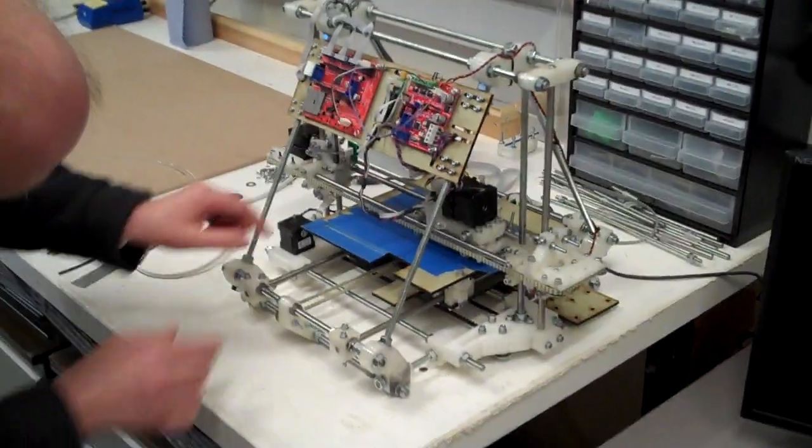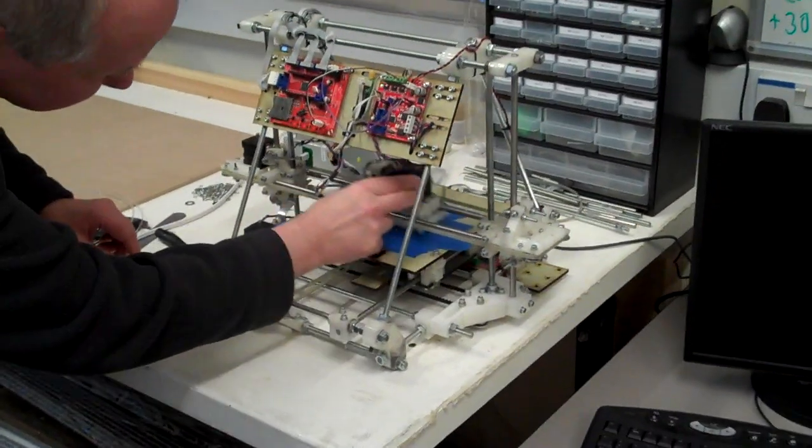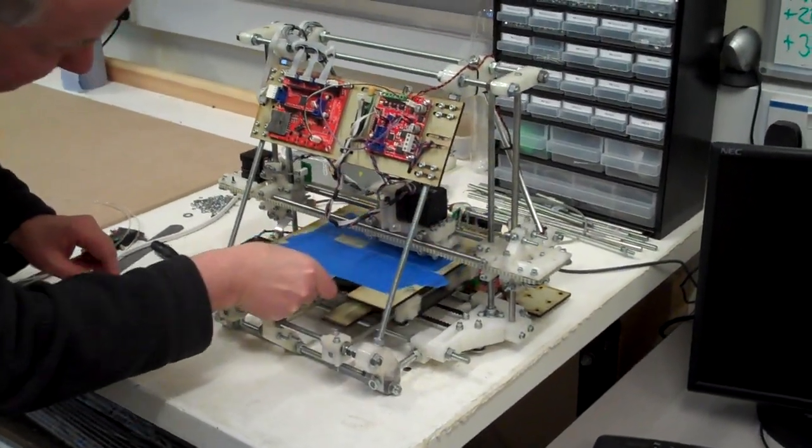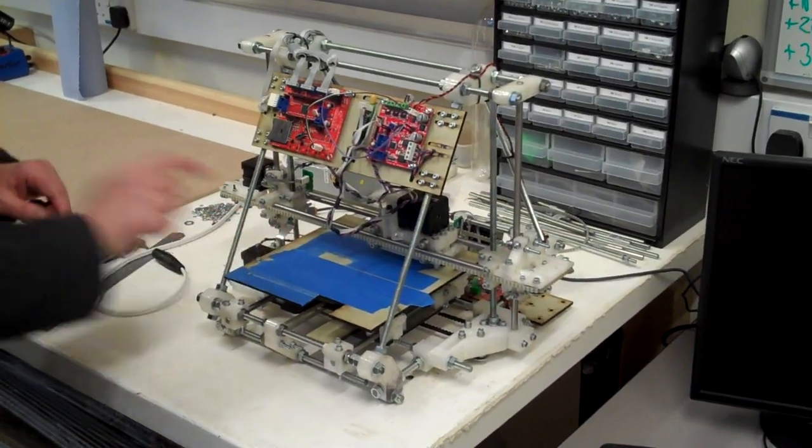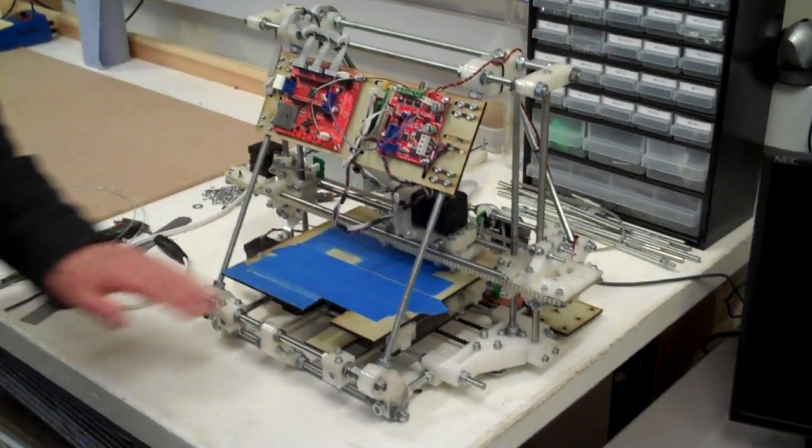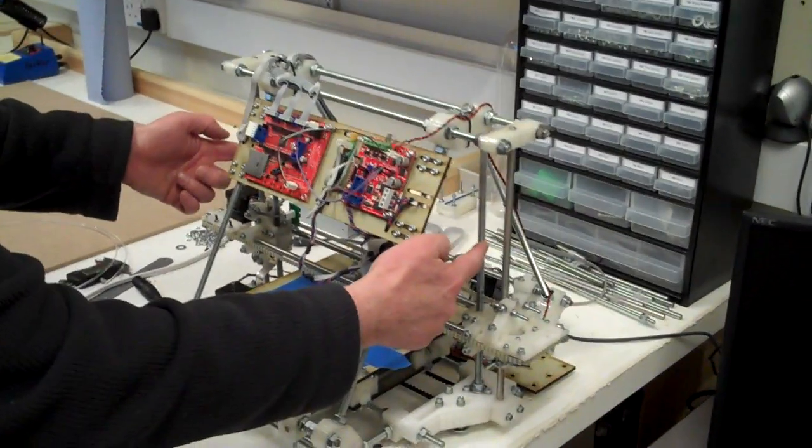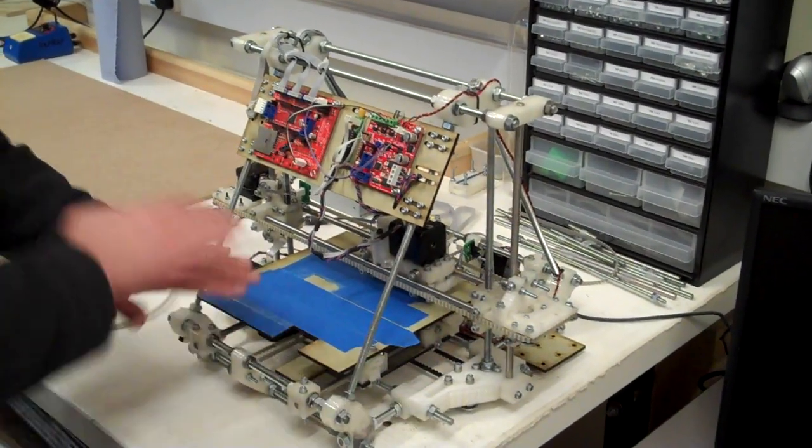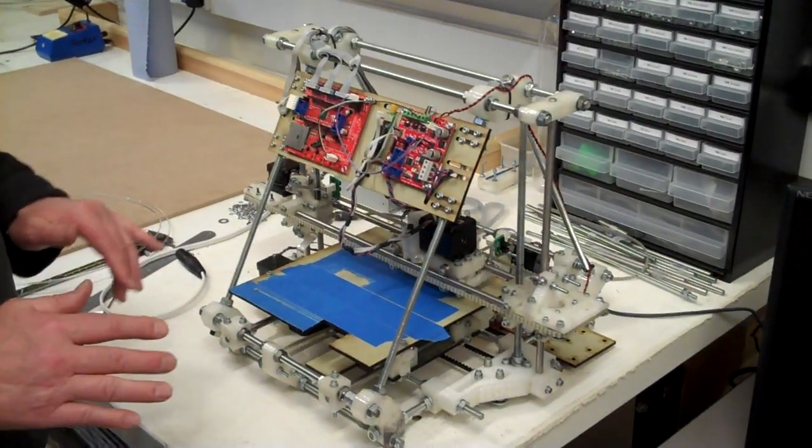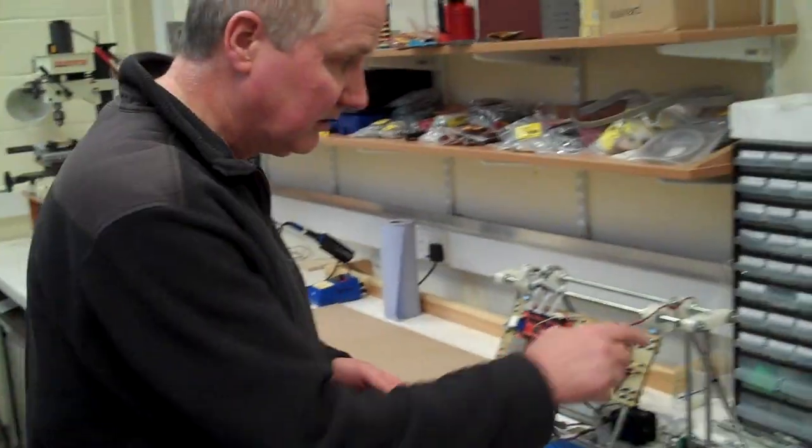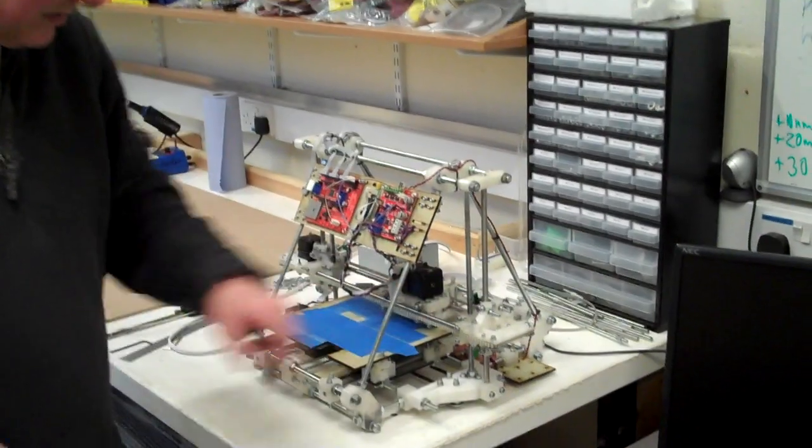And the machine then moves this head backwards and forwards this way, and this backwards and forwards this way, and scribbles a pattern on this base here. This whole assembly then moves up on these two screw threads here by a fraction of a millimeter, and it scribbles the next layer and scribbles the next layer, and after about half an hour or so, you've made one of these bits, or one of these bits, or indeed anything else you should want.